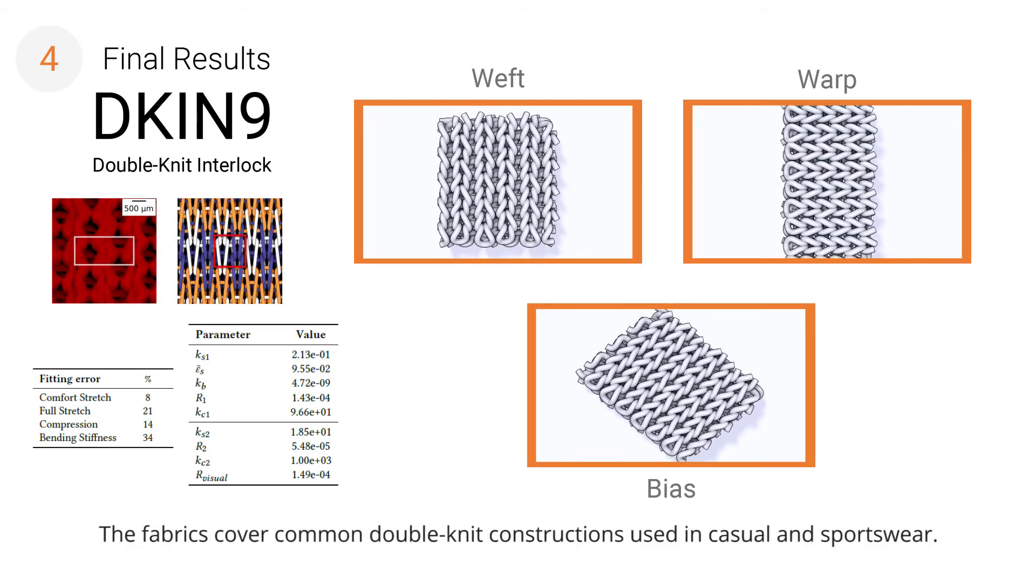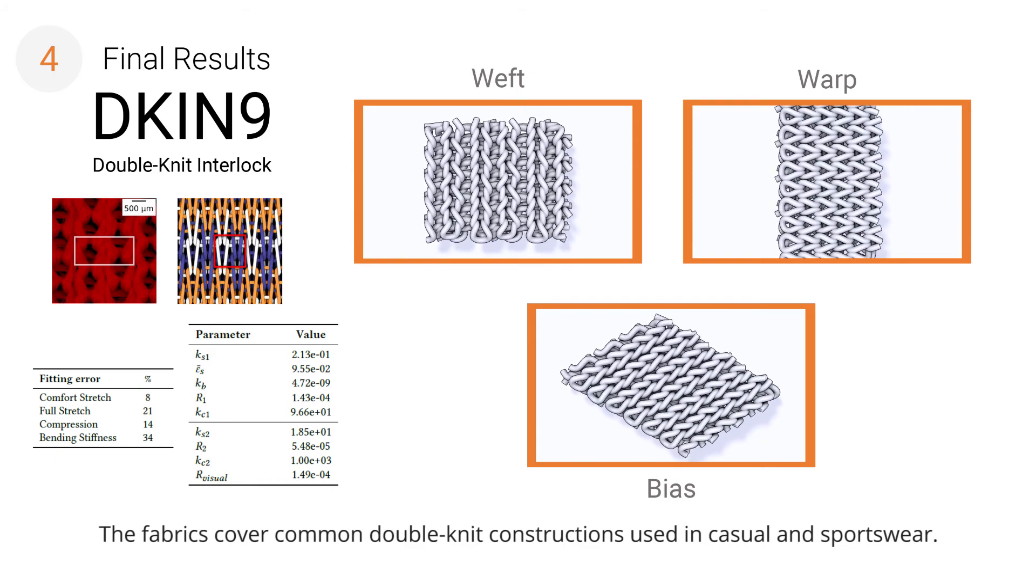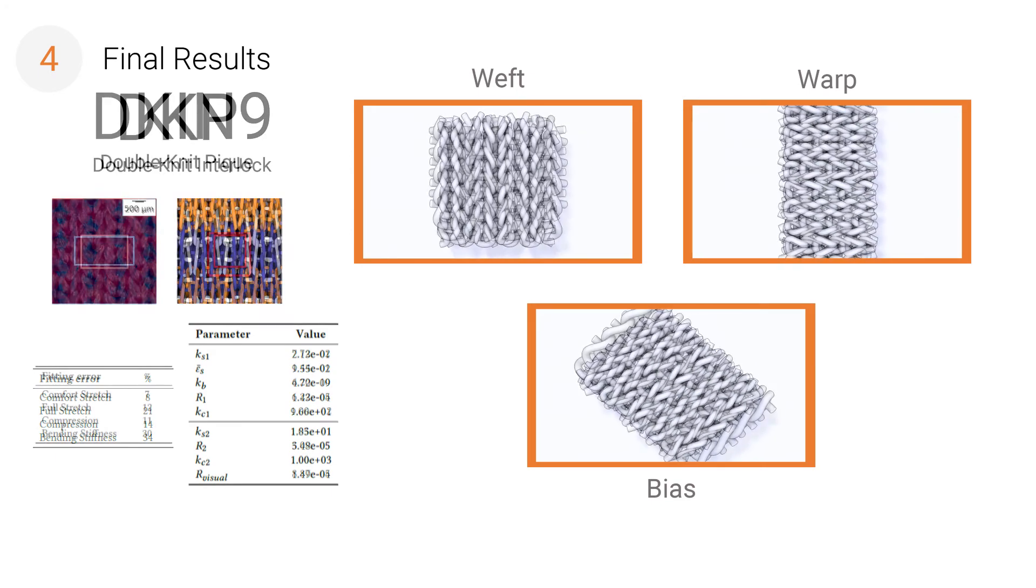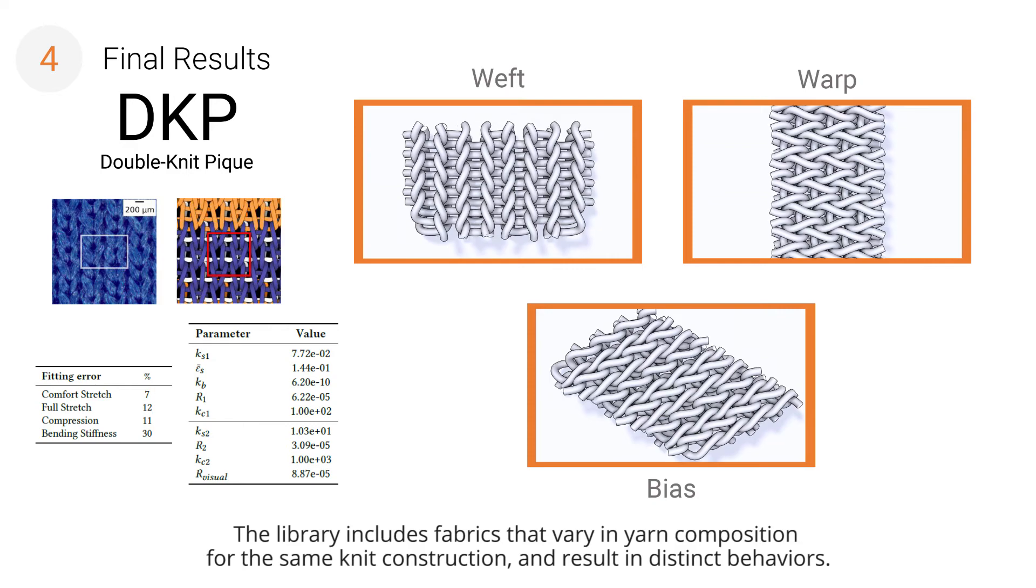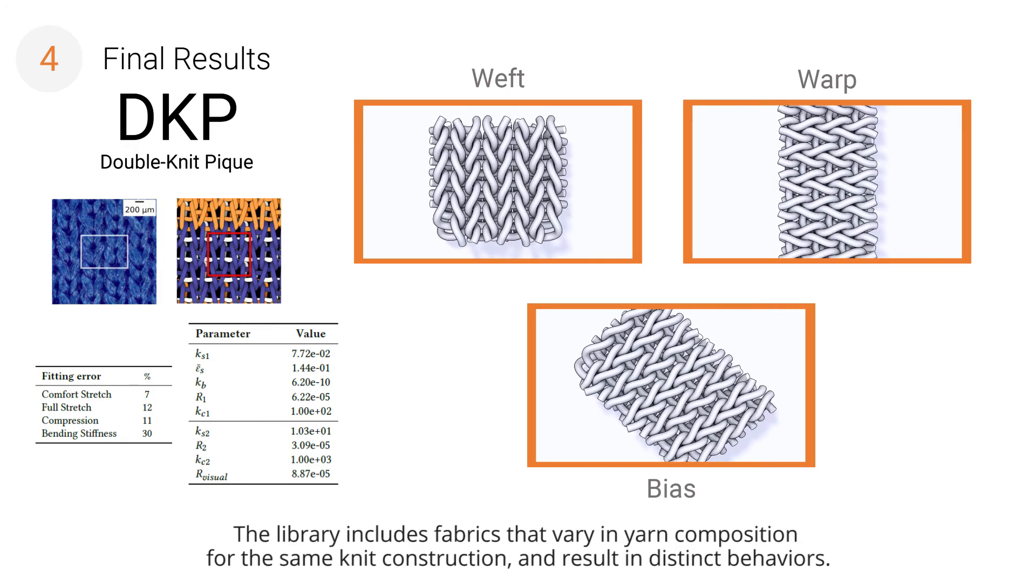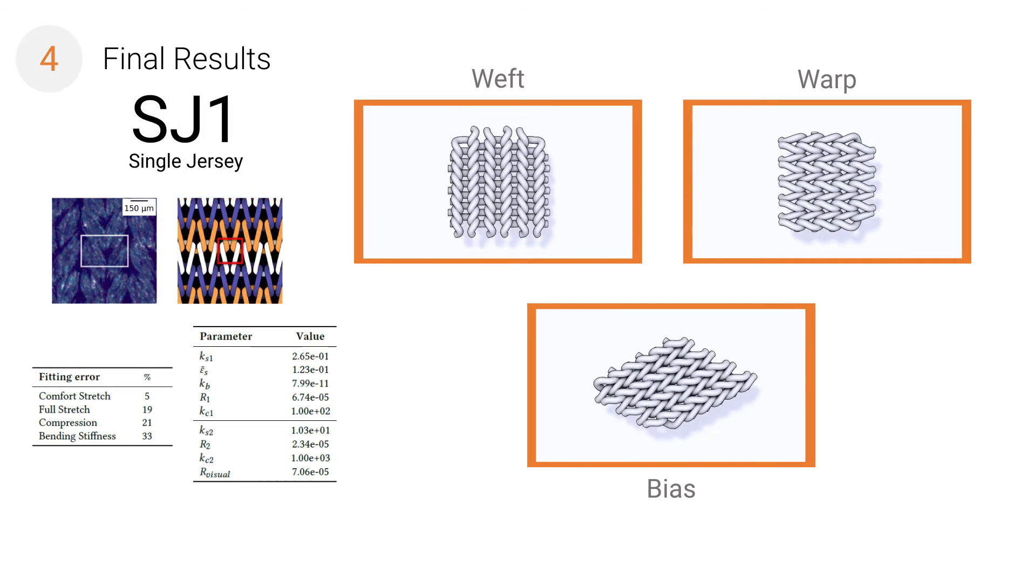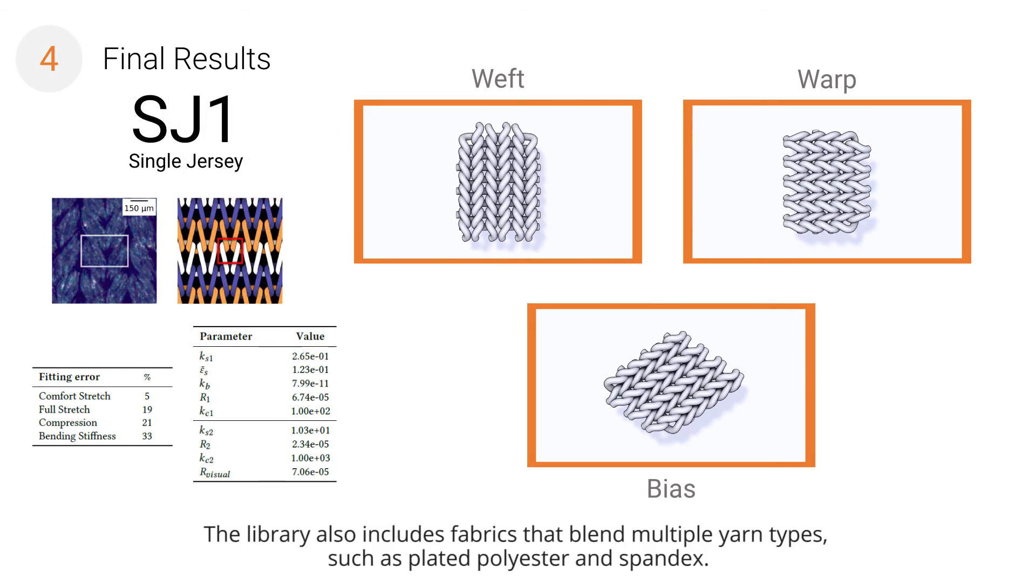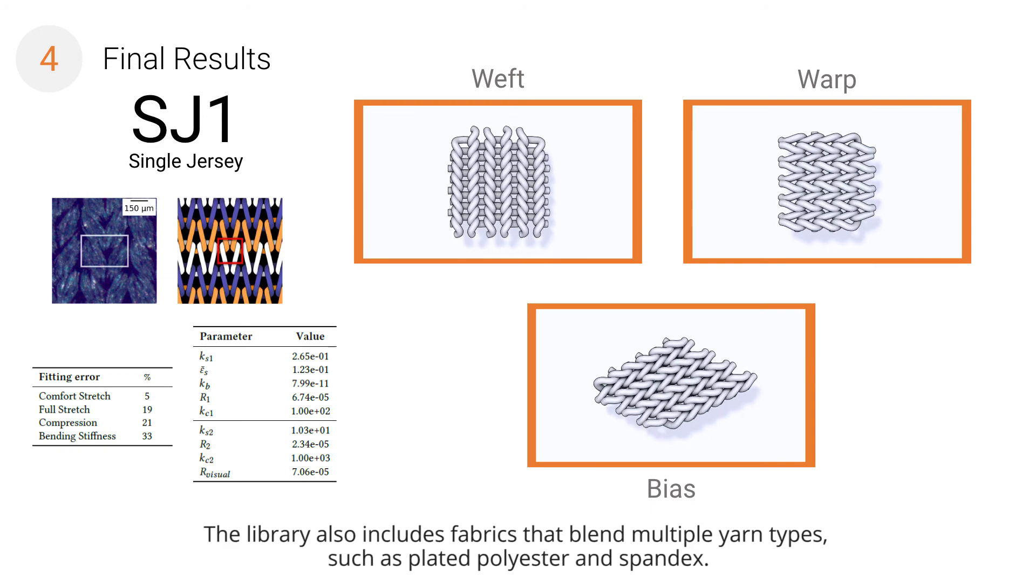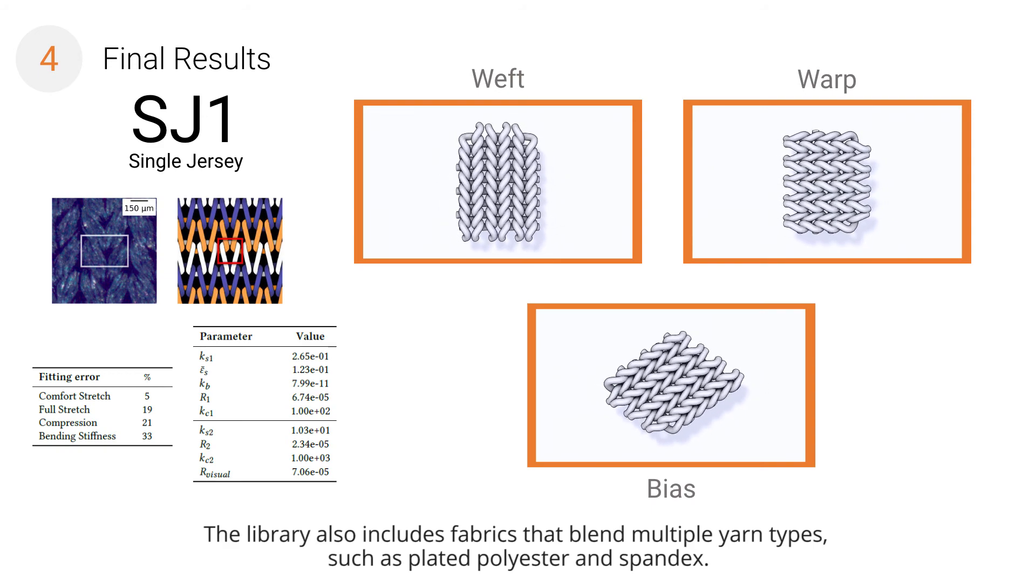The fabrics cover common double-knit constructions used in casual and sportswear. The library includes fabrics that vary in yarn composition for the same knit construction and result in distinct behaviors. The library also includes fabrics that blend multiple yarn types such as plated polyester and spandex.